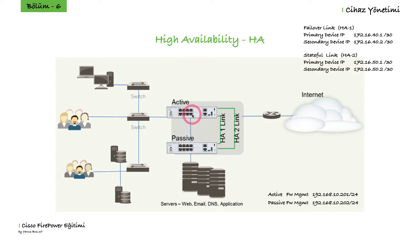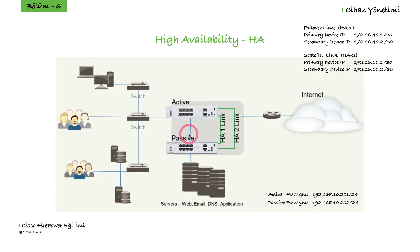The models and software versions of the firewalls we will use must be the same, and all updates must be made. We need to get the ports on these two firewalls to the same VLANs using a switch. For example, if you take the first port to VLAN 10 on the switch, you need to assign the first port on the second firewall to VLAN 10 as well. All ports on the first firewall and on the second firewall must match.